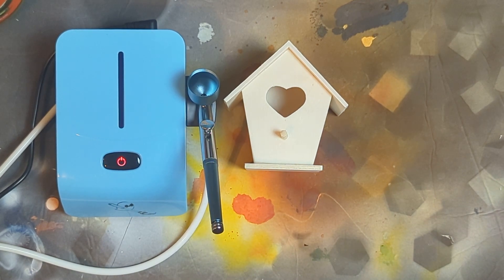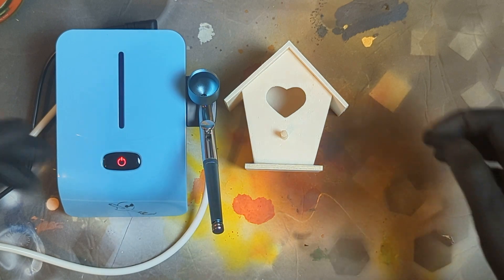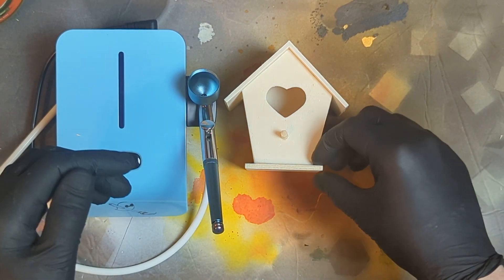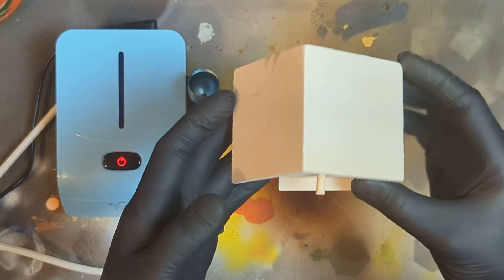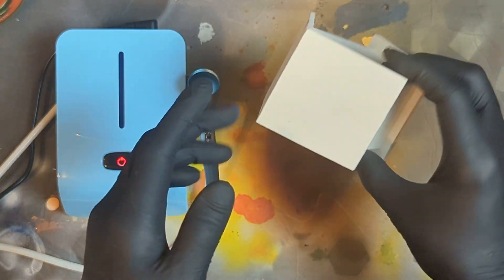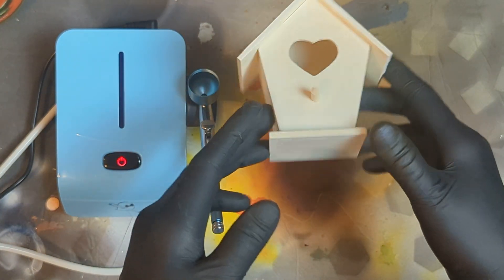What is going on everybody, we are gonna do a little Halloween craft here. We got this little birdhouse, hopefully maybe a little tiny bird could live in there. I don't know, but we got this from the Dollar Tree.